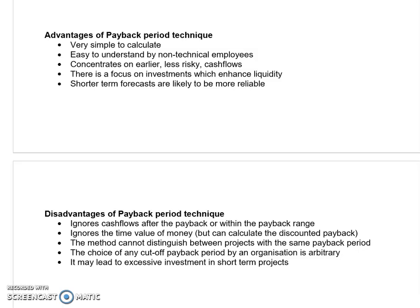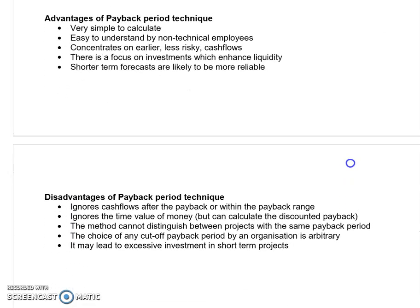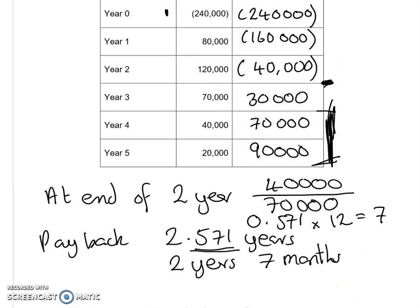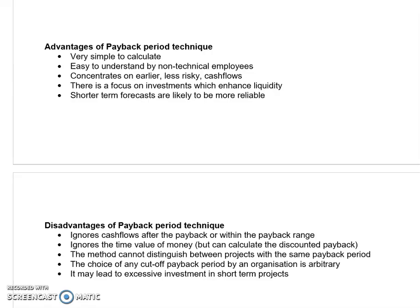The key disadvantage is that these cash flows — particularly in the last two years — do not form part of the decision-making process. Can you imagine what it would be like if that cash flow was £100,000? Surely that large inflow in the final year would impact our decision, but for the payback period it wouldn't. The other main issue is it ignores the time value of money — we'll be talking about that in another video when we look at discounted cash flow techniques — but it ignores the view that money now and money in five years' time are worth different things.